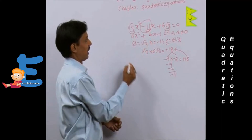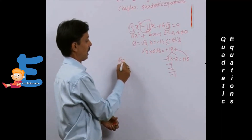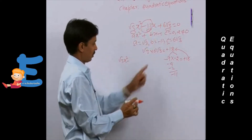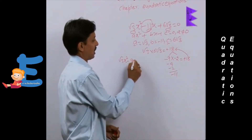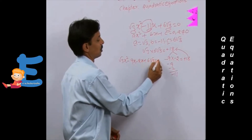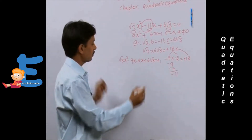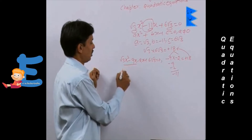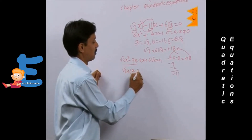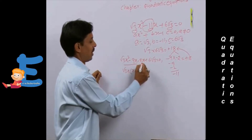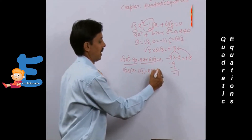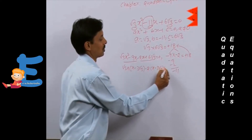And (-9) + (-2) = -11, which is our required middle term. So we rewrite the equation as: √3x² - 9x - 2x + 6√3 = 0. We take √3x common from the first part, giving (x - 3√3), and take -2 common from the second part, also giving (x - 3√3) = 0.